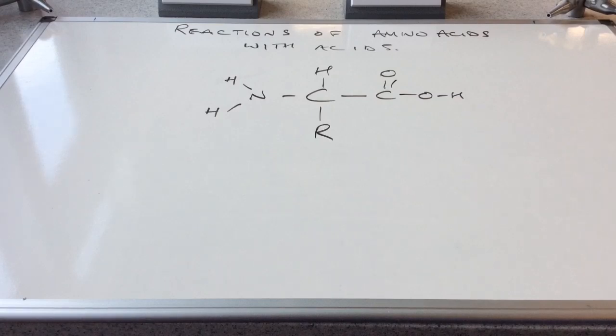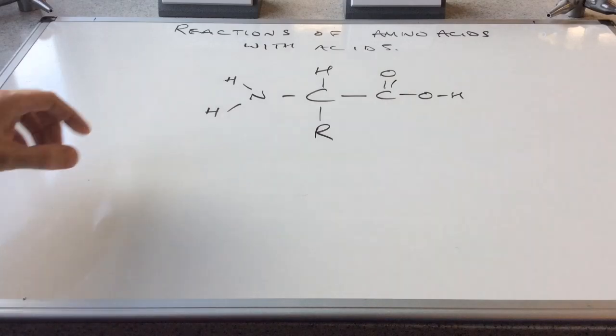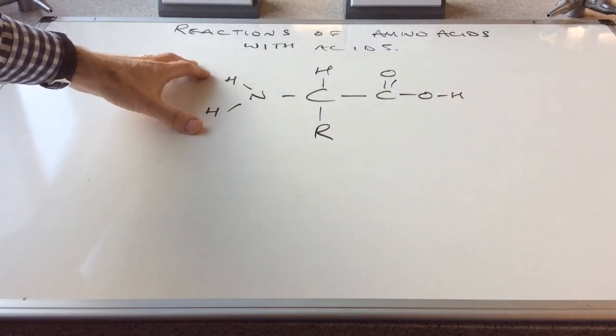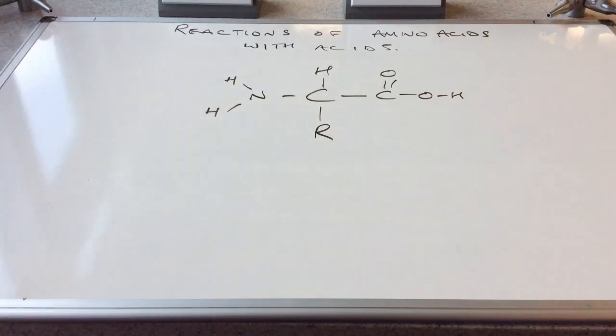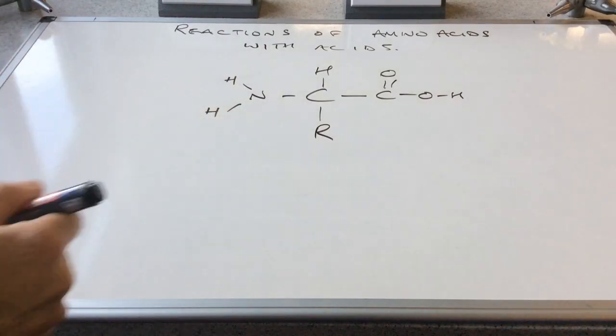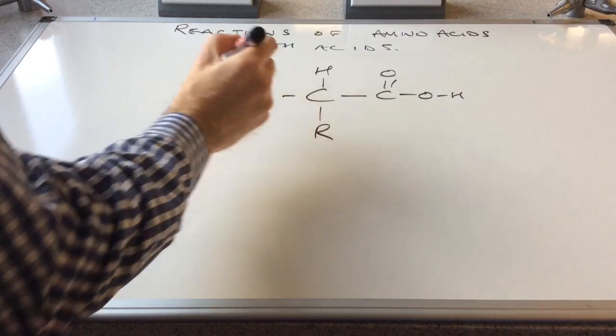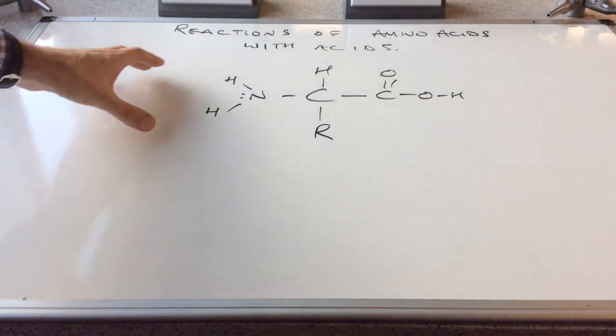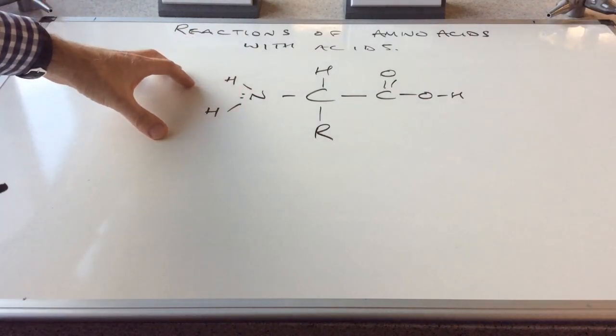So we'll start by looking at the reactions of amino acids with acids. We think about the functional groups in the molecule - we've got the amino group. This is a base group and if we remember this has got a lone pair on the nitrogen and that will enable the NH2 group to accept a proton.